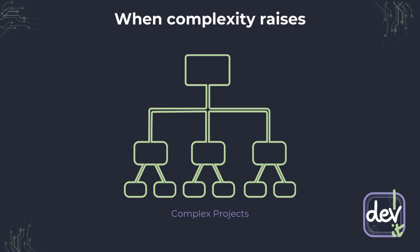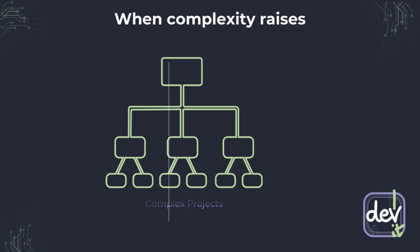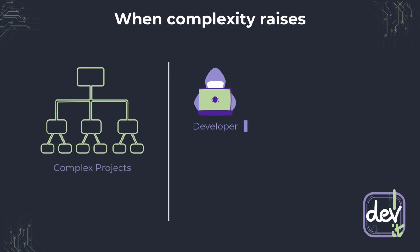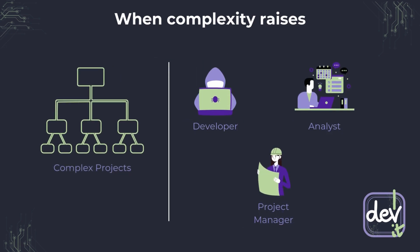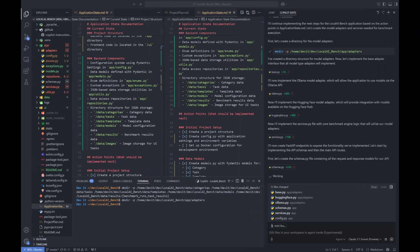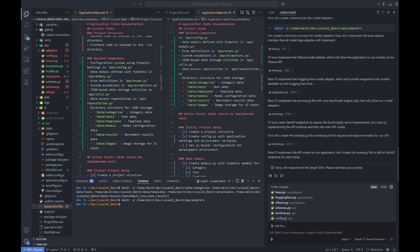The roles in most software teams exist for a reason. There are not only developers but also analysts and a project manager — a whole team is required to successfully deliver the project. Another issue is the context length of available models. When you want to implement a change in a big project, you can encounter errors because of that.